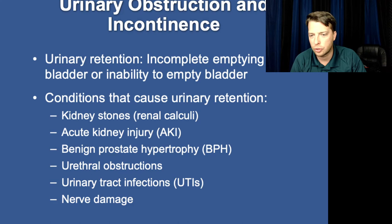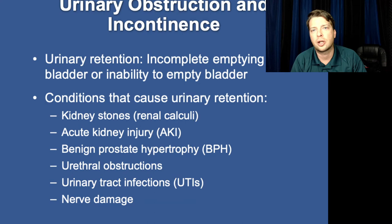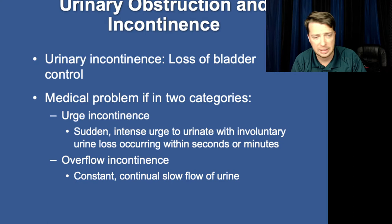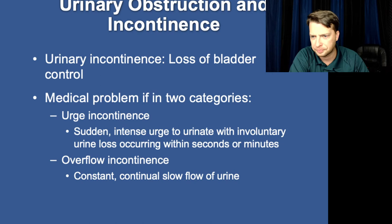Urethral obstructions with foreign bodies, abscesses, or tumors. And of course, UTIs and nerve damage or nerve conditions like multiple sclerosis — MS — are going to alter the control of the bladder sphincters, and with that altered control the patient may have difficulty voiding. Incontinence is where the patient has a reduction of control and so they pass urine without intending to.